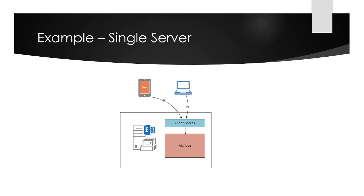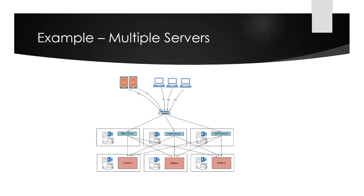That's important to remember as we start looking at configuring certificates and other things on the server. The Client Access Server role will authenticate and proxy those connections to the Mailbox Server role — in this case literally on the same server. In a more complex example where the Client Access and Mailbox server roles are on separate hosts, you can see how protocol flows work with client connections coming through a load balancer, distributed to Client Access Servers, which then proxy or redirect traffic to the Mailbox Server based on where the mailbox is hosted.